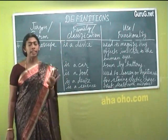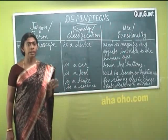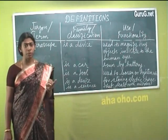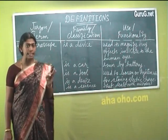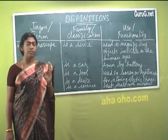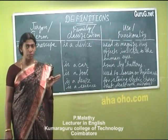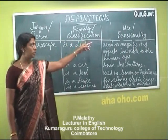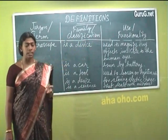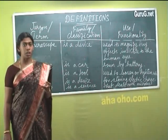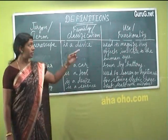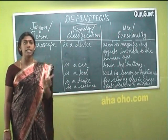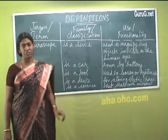So when we define a technical jargon, we have to follow the three rules we have studied. Number one, it should be simple. Number two, it should be in a single sentence. Number three, it must have three components: the terminology must be there, the classification must be there, and the third component must be the functionality. The term, the family or classification, and the functionality or usage — all three things must be there in a single sentence that is simple enough. Then it will be a perfect definition.